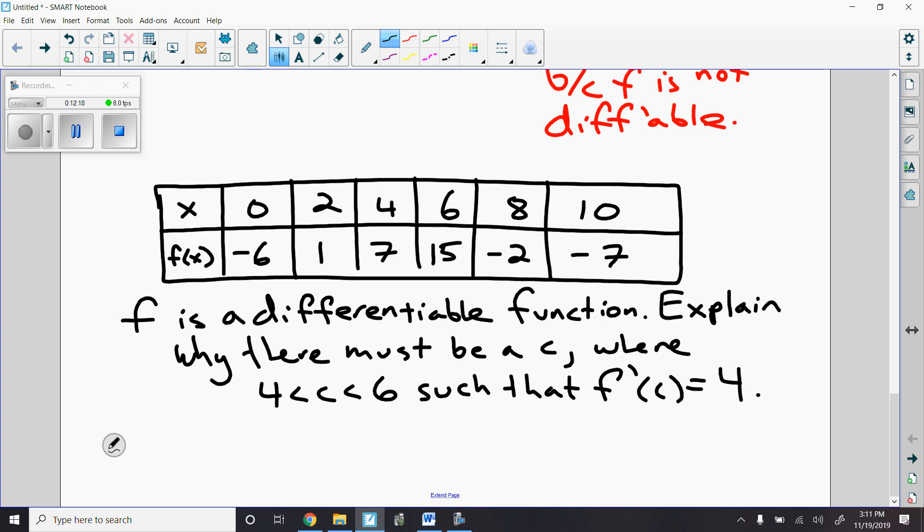So what I want to do here is figure this out. I'm going to set this up using the mean value theorem. But first, I just want to check to make sure that this actually works by looking at this spot right here. And I want to show that F of B minus F of A over B minus A equals 4. So 15 minus 7 is 8. 6 minus 4 is 2. 8 divided by 2 is 4. So I know this is going to work. Now I just have to justify it.